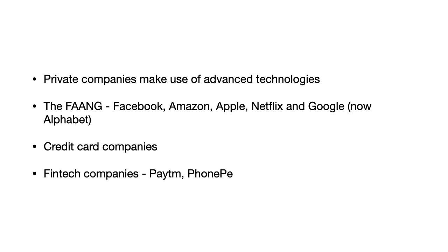It has been observed worldwide that private companies use advanced technologies in a better manner. They invest in these technologies, they innovate, and they have R&D — research and development — departments. You can see the example of the FAANG companies: Facebook, Amazon, Apple, Netflix, and Google — now Alphabet. These American giants have based their business solely on technology. Then there are credit card companies like MasterCard and Visa, which have a worldwide network linked with local banks, issuing credit cards, debit cards, and Forex cards with no server issues.